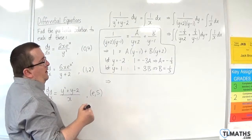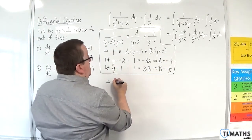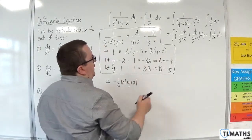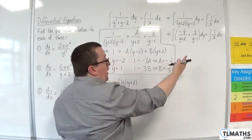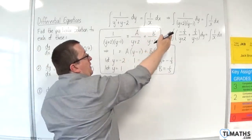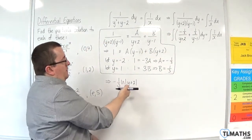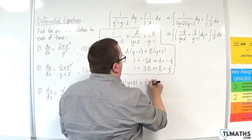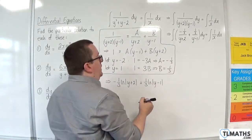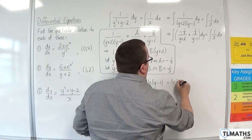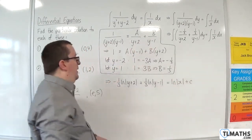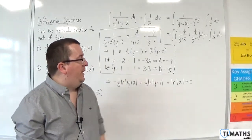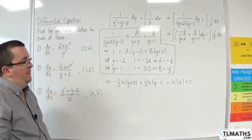So let's do the integration. On the left-hand side, we're going to get −1 third times the natural log of |y+2|, because the derivative of the denominator is just 1. So minus 1 third times the log of |y+2|, plus 1 third times the natural log of |y−1|. The right-hand side will be the natural log of |x| plus some constant c. At this stage you could substitute the point (e, 5) in to work out c.